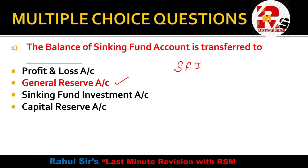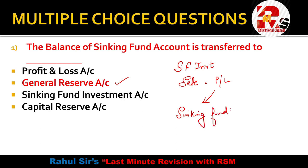Regarding sinking fund investments: after the investments are made, at the end we sell those investments, and whatever profit or loss arises is transferred to the Sinking Fund account — not to Profit and Loss. Students often get confused by this point. Remember: profit or loss on sinking fund investment is transferred to the Sinking Fund account. The sinking fund balance itself goes to General Reserve.